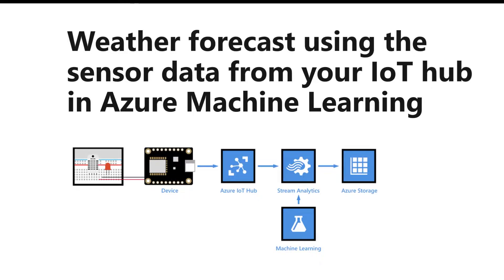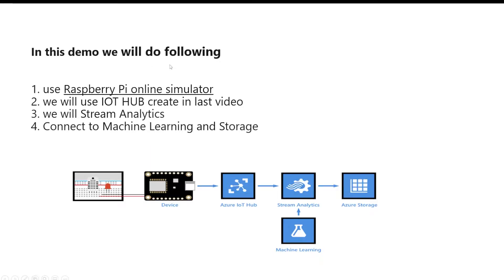In this demo we are going to use the Raspberry Pi online simulator since we don't have physical devices. We will use IoT Hub, Stream Analytics, and Machine Learning Studio. But the question is why we need that, so let's look at some use cases.